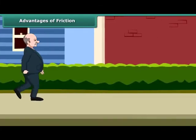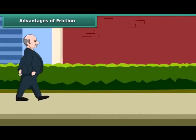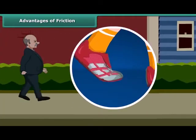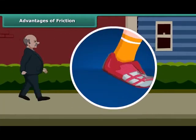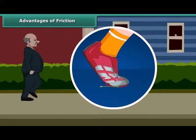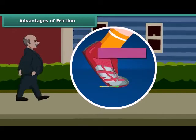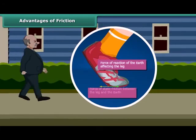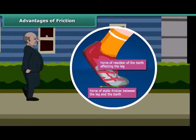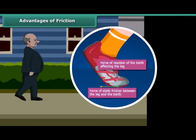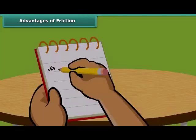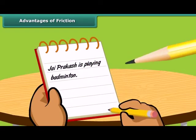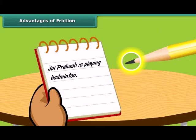Friction is both good and bad. We are able to walk because friction prevents us from slipping. When we push the ground with our foot, the friction provides a forward reaction to our push and pushes us forward. We are also able to write because there is friction between the tip of the pencil and the paper.